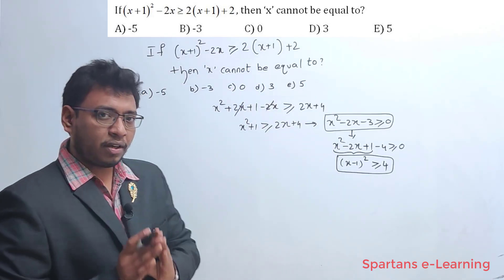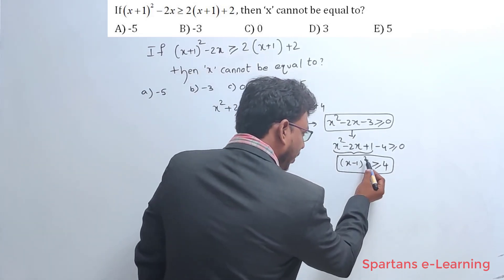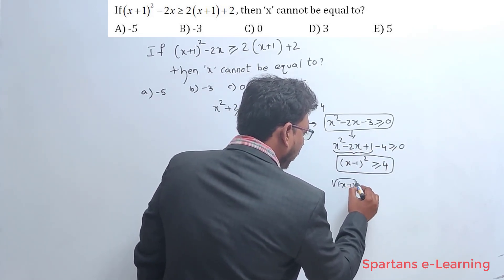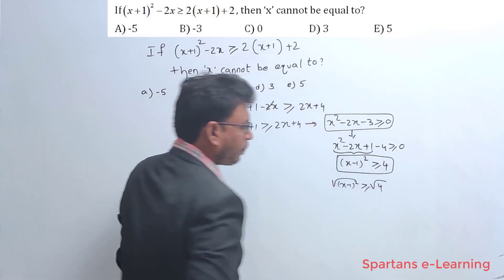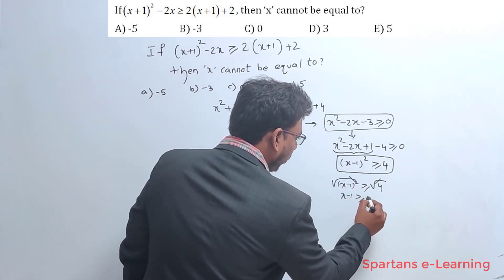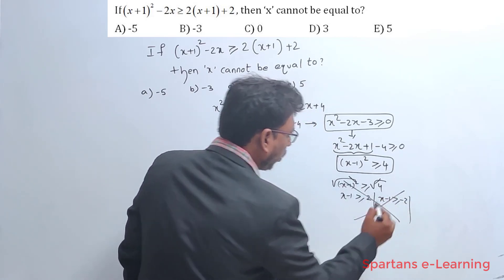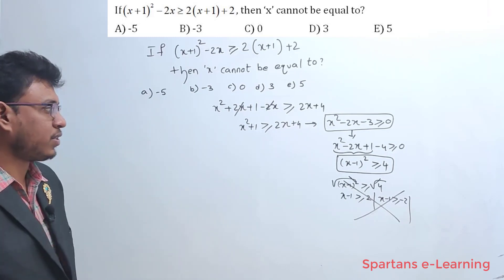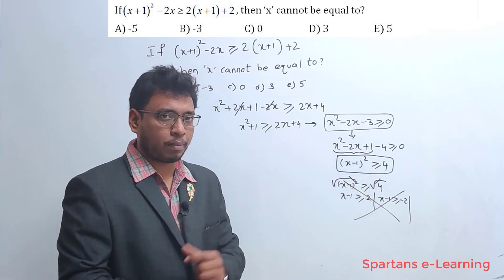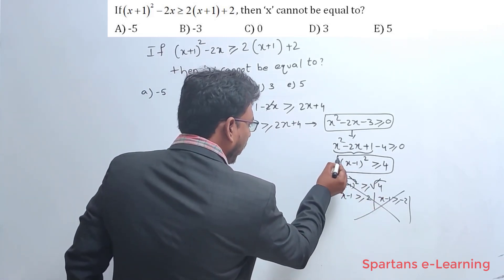Now you should be very careful here. Once this is done, what many people will do is simply square-root both sides and write x-1 ≥ 2 and also x-1 ≥ -2, which is completely wrong. Don't make that mistake. We have already discussed this in the perfect squares chapter. Now, (x-1)² ≥ 4 means I can take the square root on both sides.